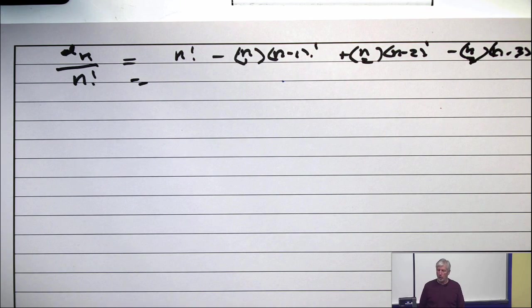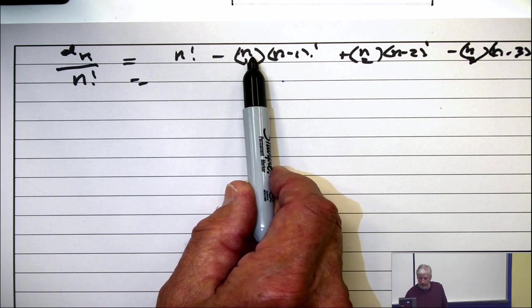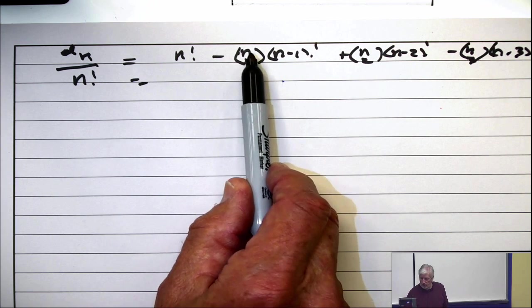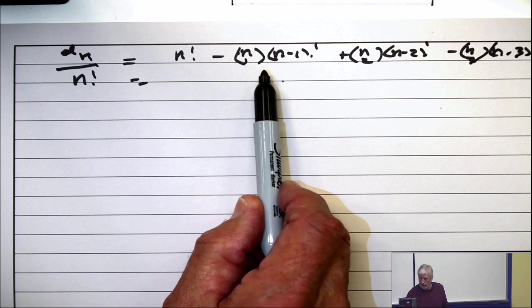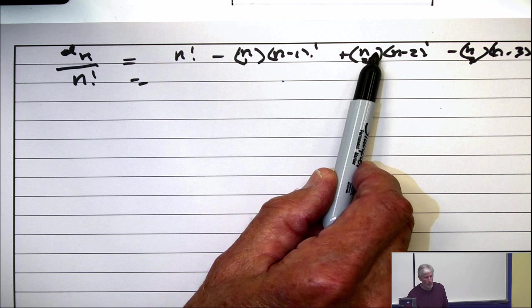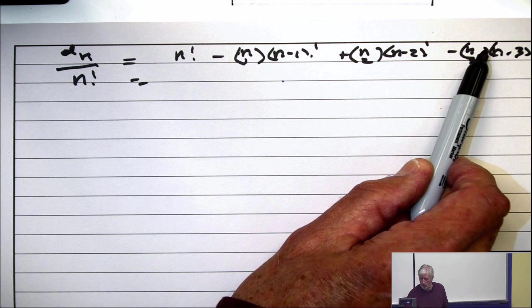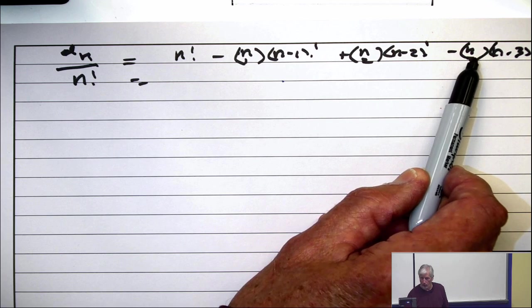Now, let's just do a little analysis on this. N choose 1 is N over 1 factorial. And this is N times N minus 1 over 2 factorial. This is N times N minus 1 times N minus 2 over 3 factorial.